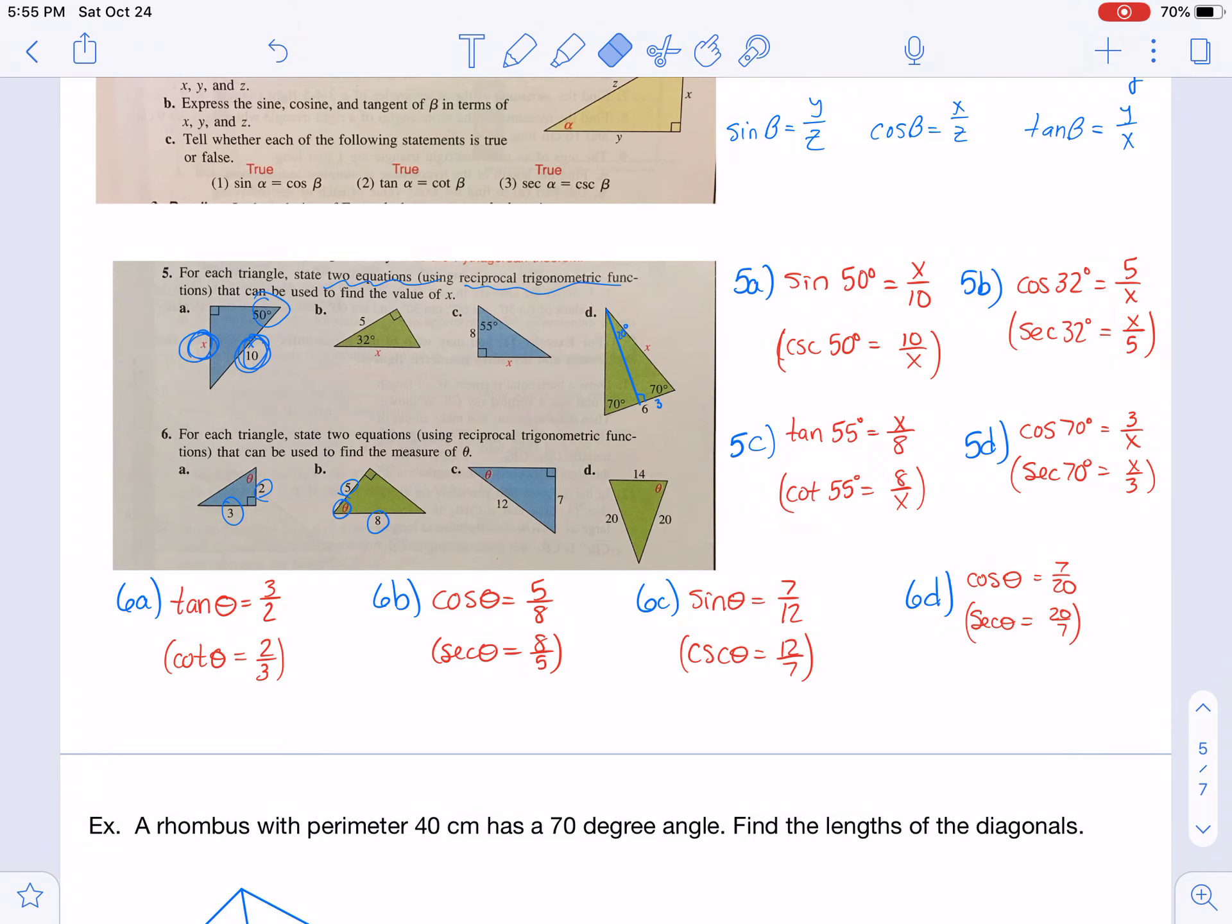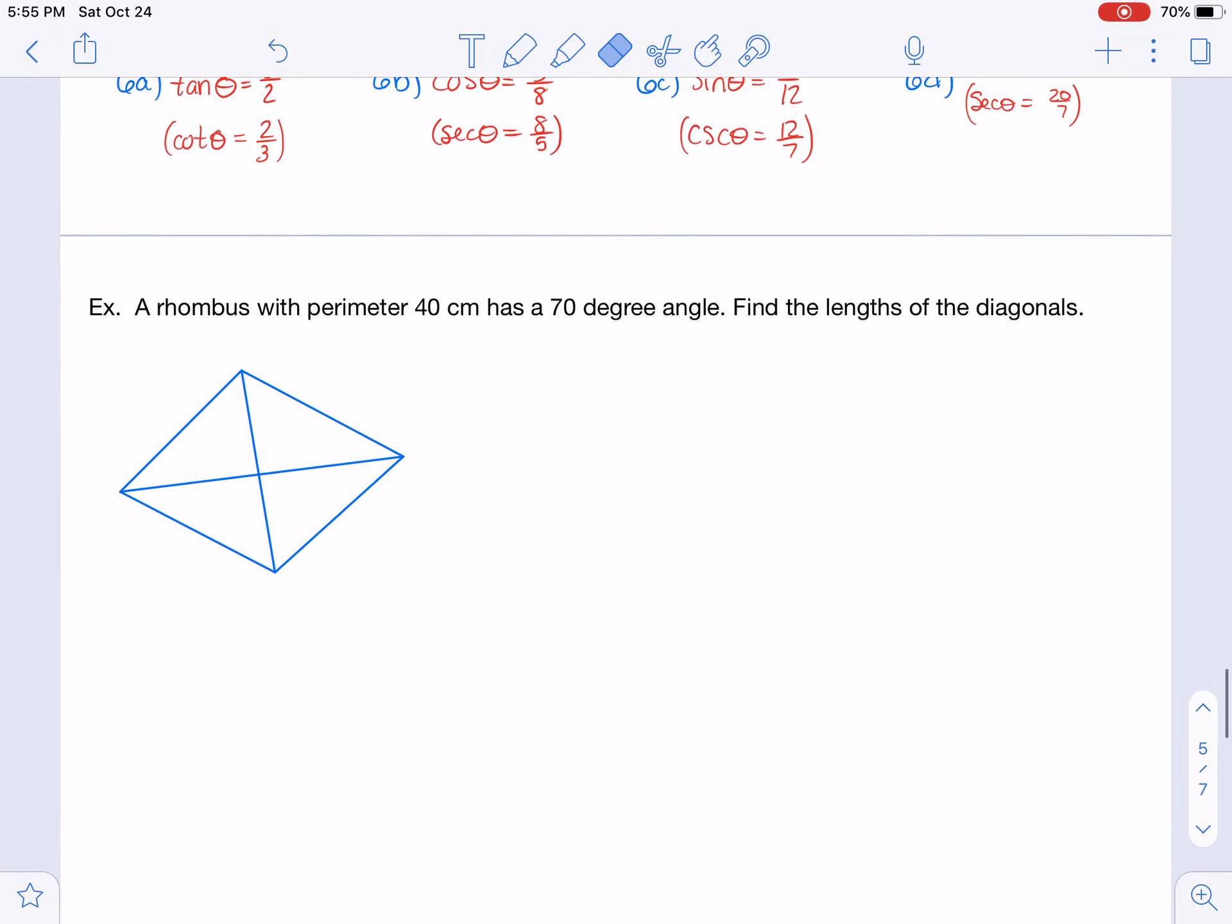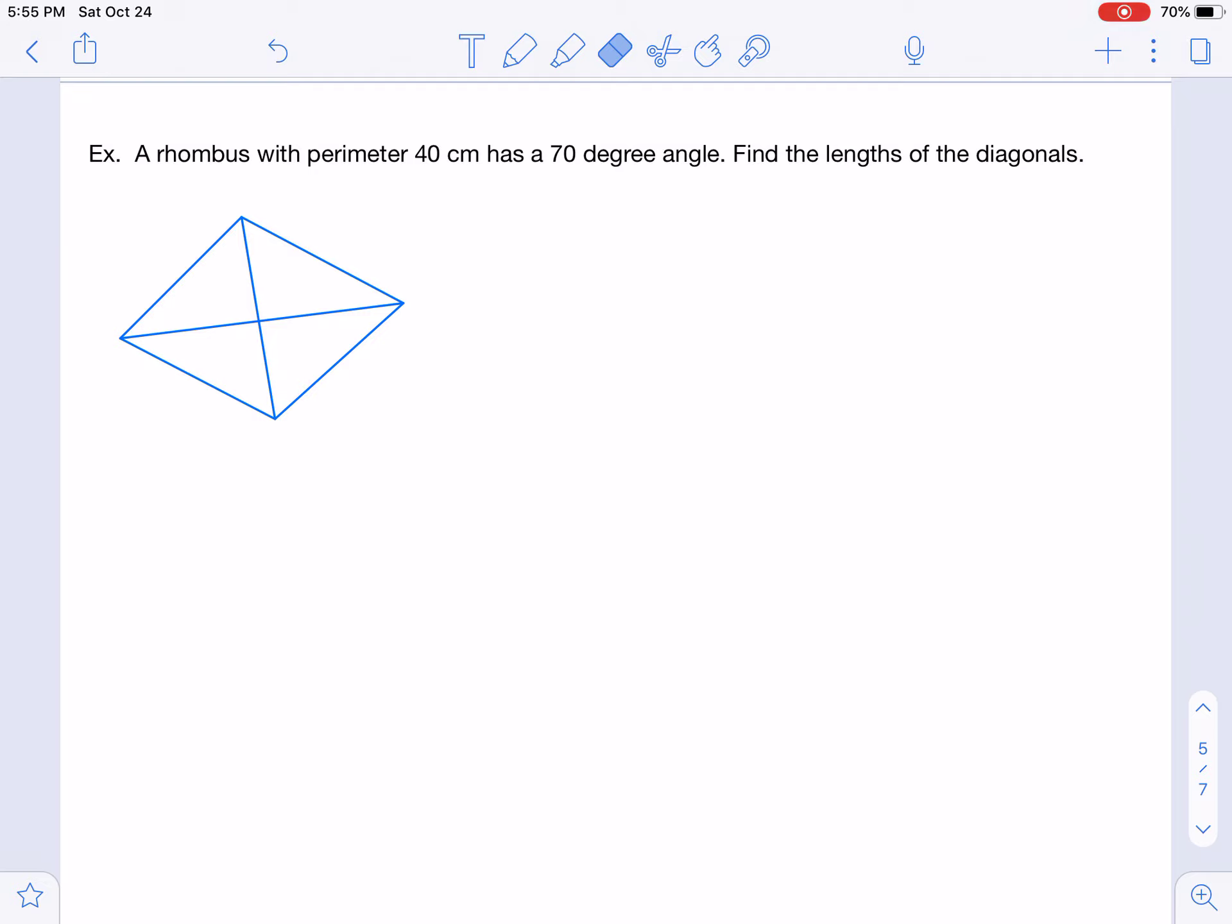And then I have one more example down here that takes things a little bit further. You have to remember some geometry when it comes to some of these story problems. It says a rhombus has a perimeter of 40 centimeters and a 70 degree angle and asks for the lengths of the diagonals. So rhombuses have four sides that are all the same. So if it has a perimeter of 40, that means each of these is 10. And also in rhombuses, the diagonals are perpendicular. So these are all right angles in there. You don't have to draw them all in, but you can if you'd like. So we have our right triangles there, and we have the hypotenuse of it. And we're looking for then essentially x and y because you could double it because the diagonals are bisected as well.